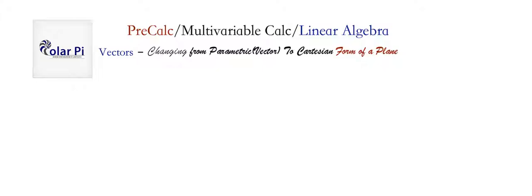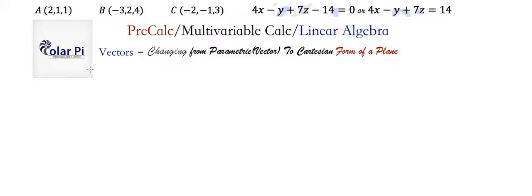This video is in part fun, in part straightforward. In the video on the vector equation of a plane, I said that you can write the vector equation of a plane given three points. So let's suppose that you are given these three points that we used in the video on the Cartesian equation of a plane, where we used the normal vector. We want to show here that once we use these three points to write the vector equation of a plane, when we convert it to the Cartesian equation, it should be consistent with what we found when we used the normal vector.